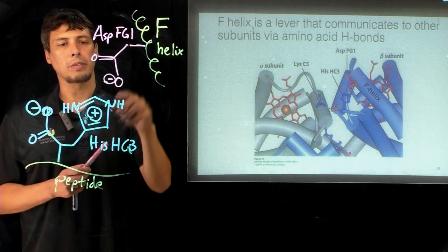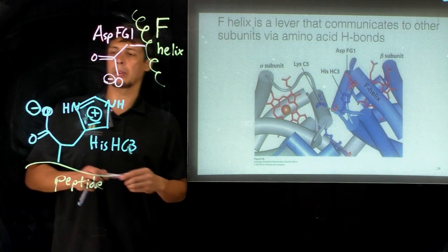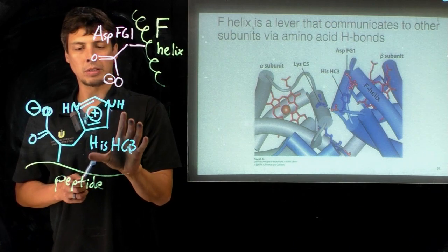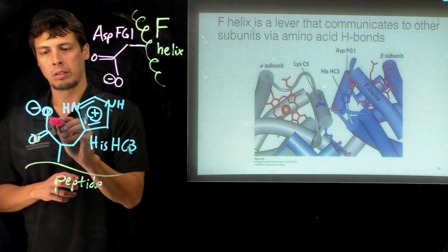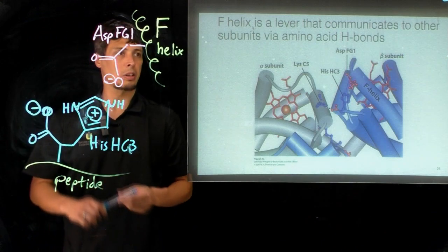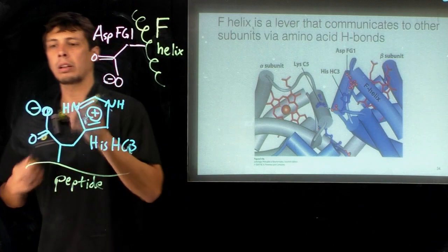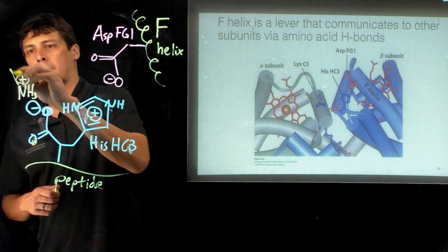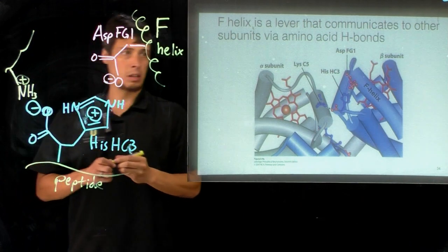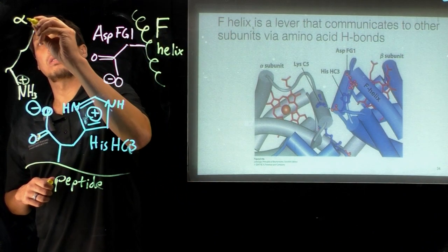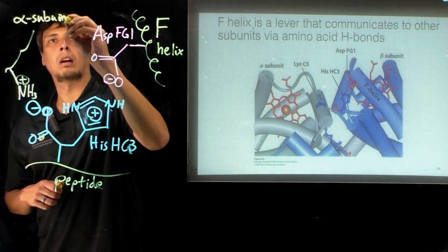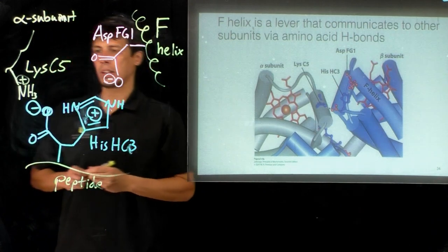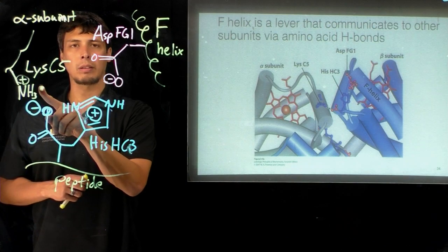In addition, as I said, this is the C terminal residue of the beta subunit. What that means is that there's this C terminus, this carboxylate, which is also negatively charged. That interacts with another residue in the alpha subunit, which we'll show in yellow. This is the side chain of lysine C5, which has at the end of the side chain a positively charged amine group at physiological pH.